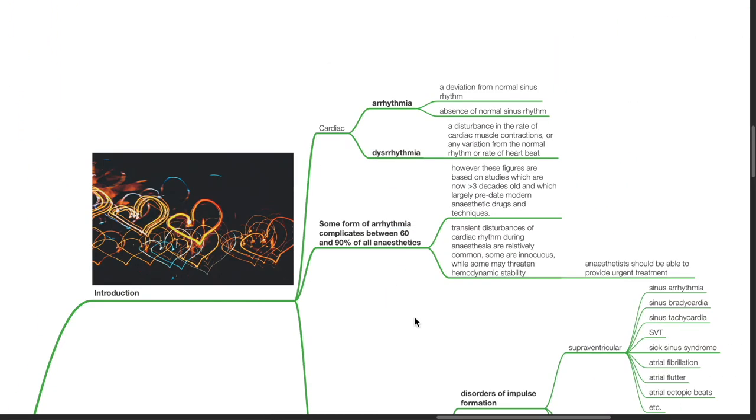Introduction. Cardiac arrhythmia is a deviation from normal sinus rhythm. It also refers to absence of normal sinus rhythm, and cardiac dysrhythmias refers to a disturbance in the rate of cardiac muscle contractions or any variation from the normal rhythm or rate of heartbeat.